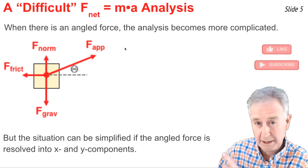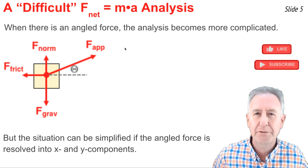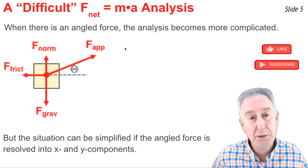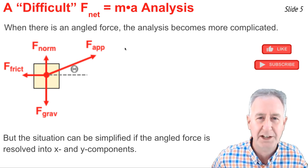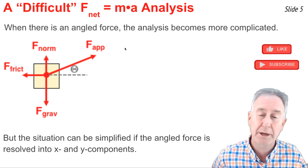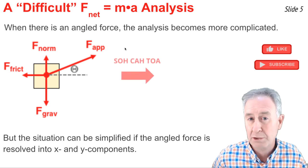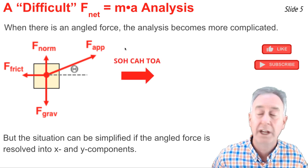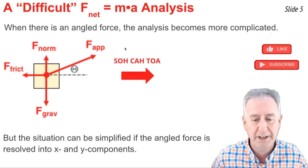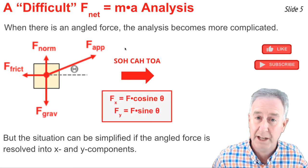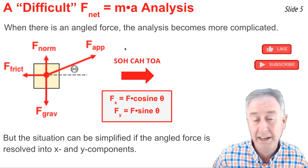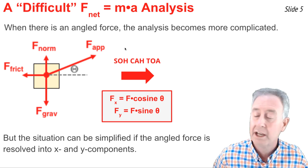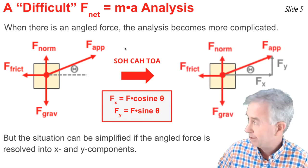When I see a force diagram that looks like this, I get prepared for a more difficult analysis. Things become complicated when a force is at an angle to the traditional x and y axes. But I can simplify matters by using my trig functions—sine, cosine, and tangent—in order to convert this diagram to a different diagram that shows the components of that angled vector. I can use Fx equals F cosine theta and Fy equals F sine theta to convert this diagram into that one.